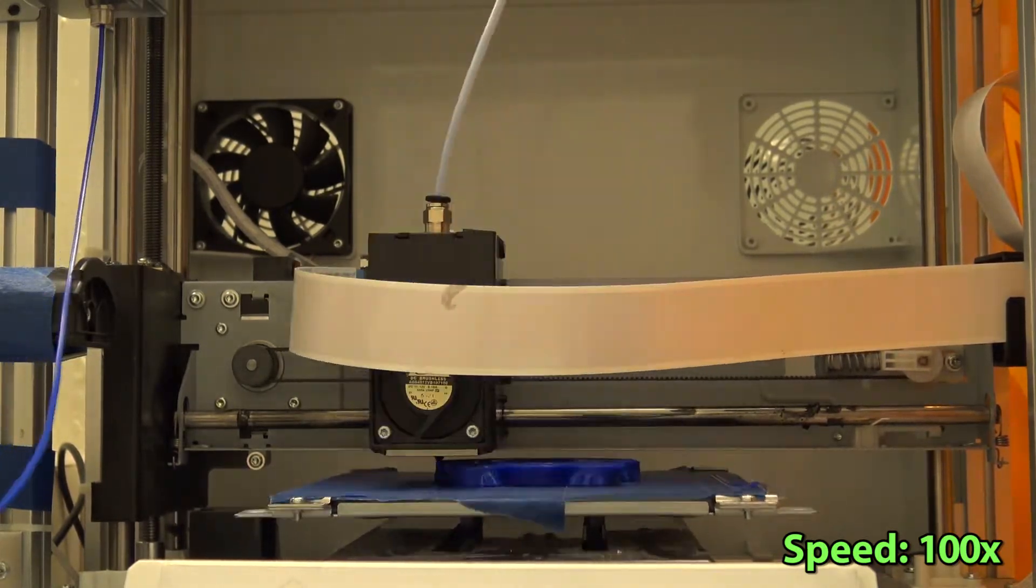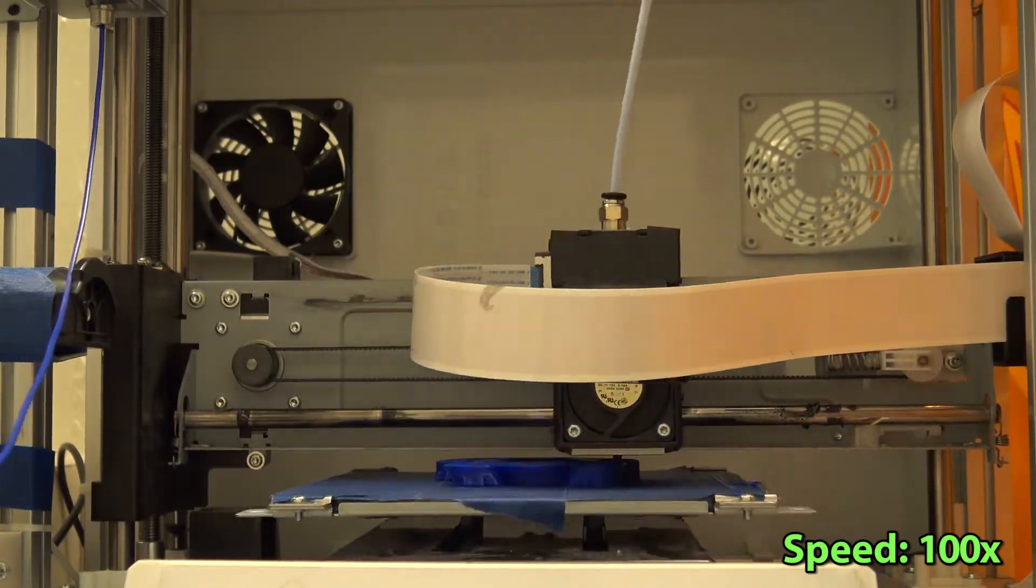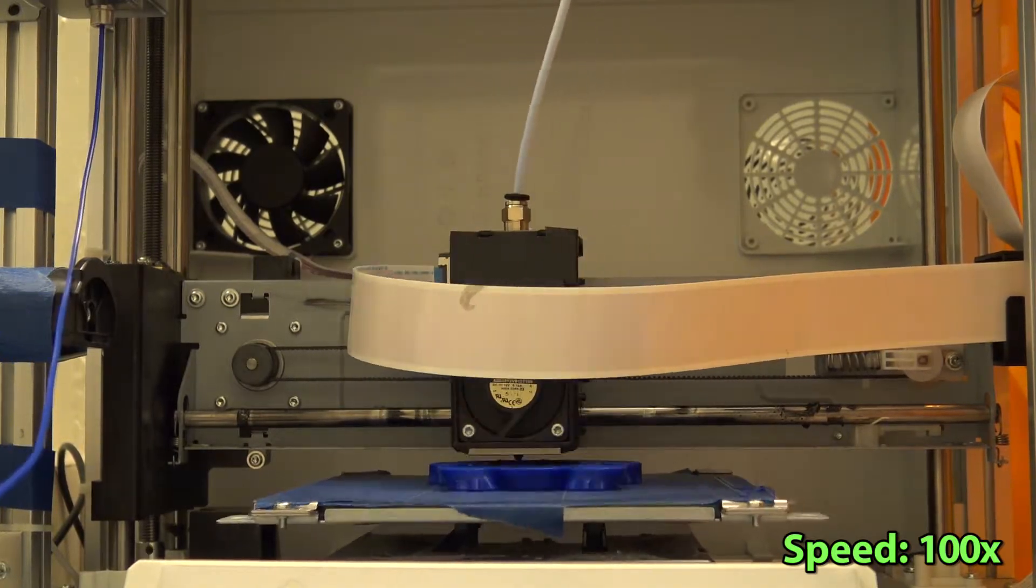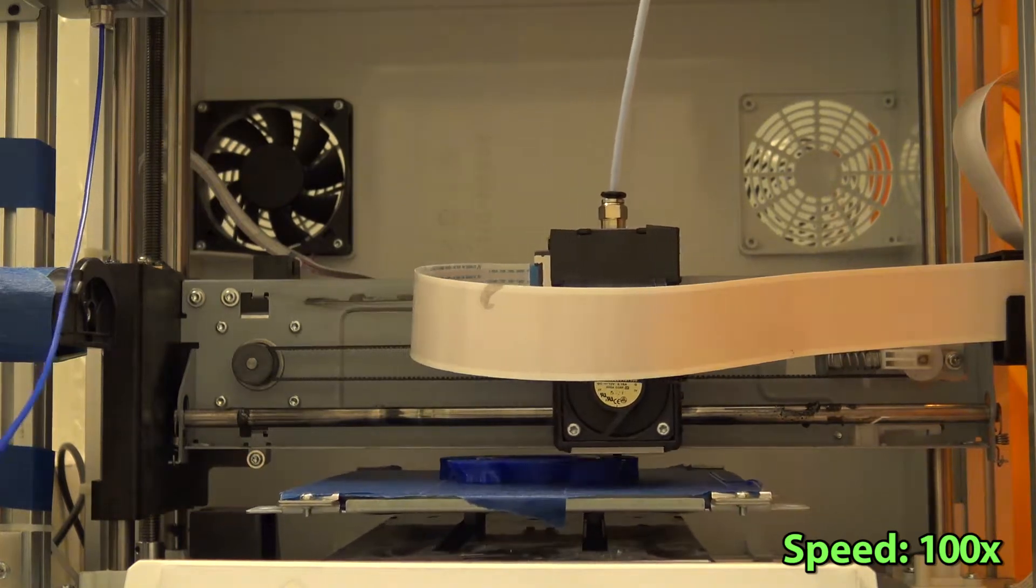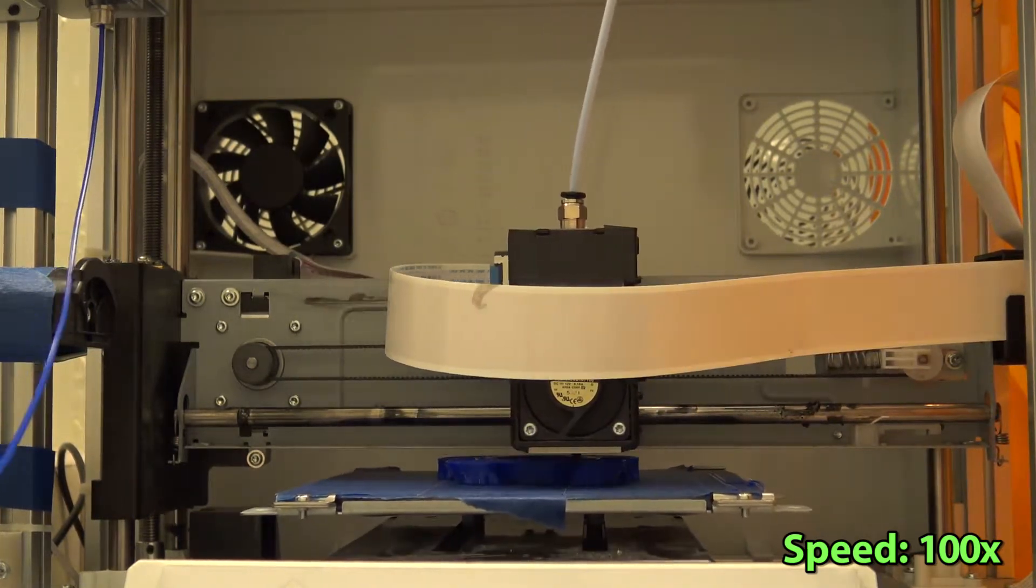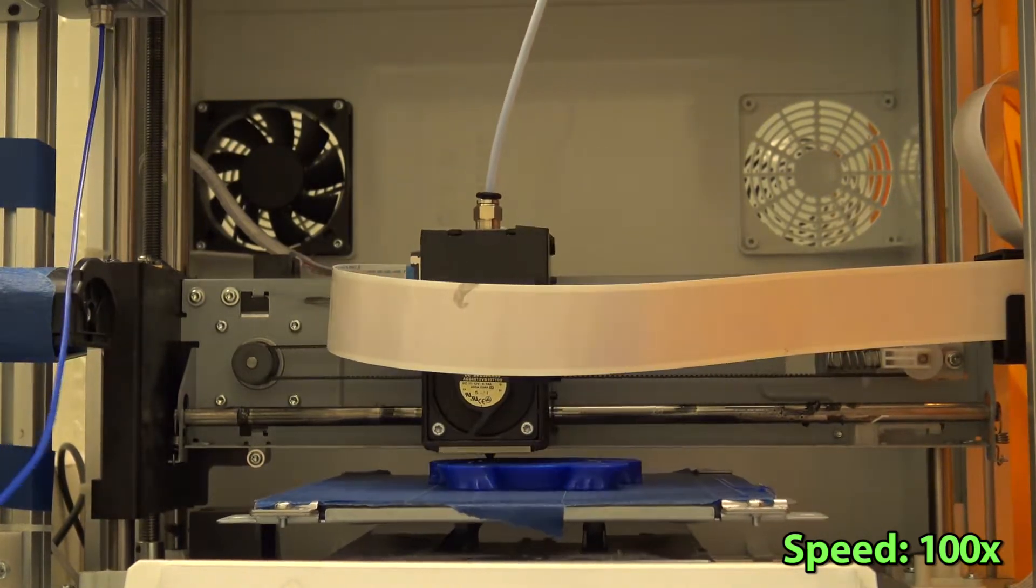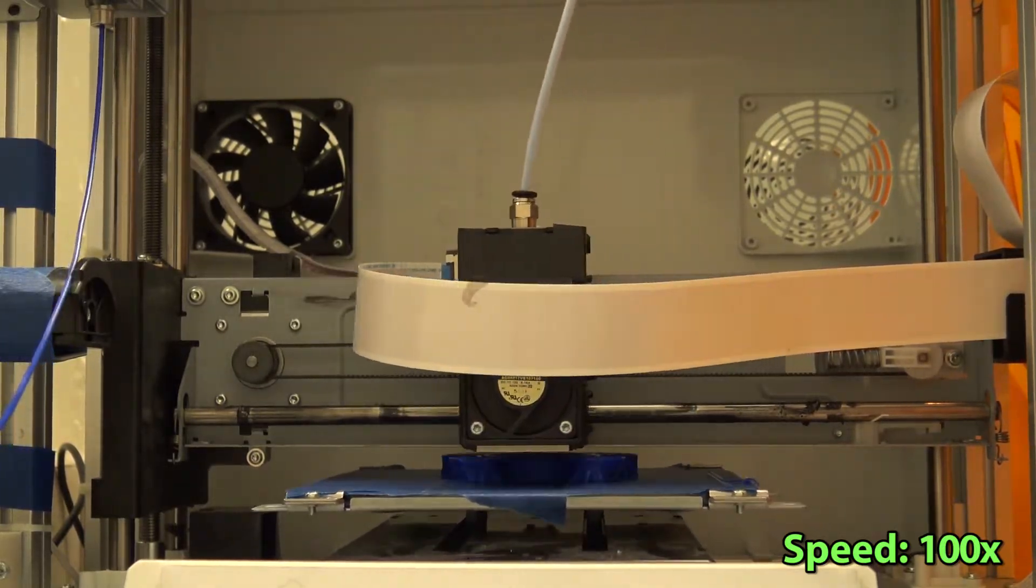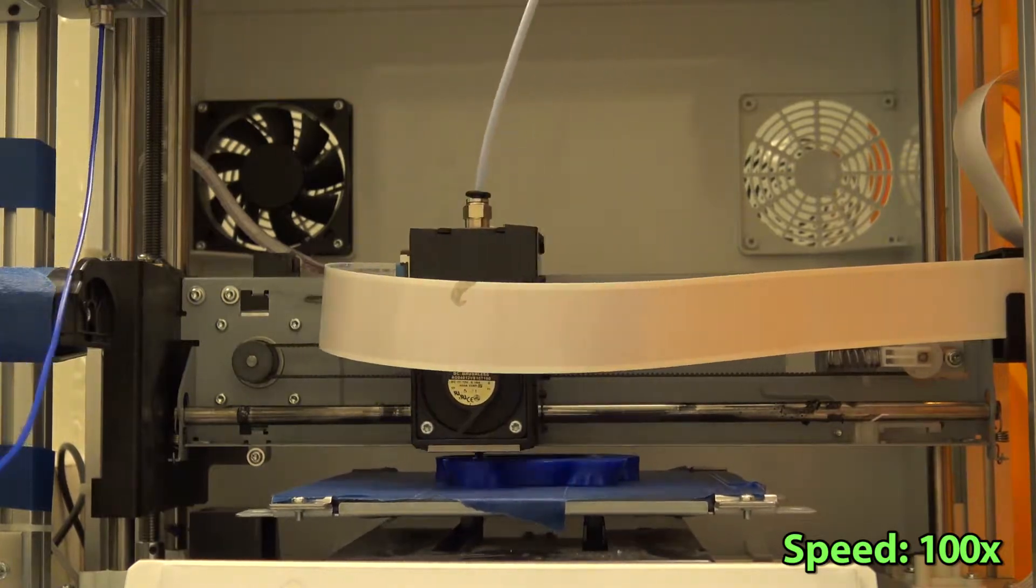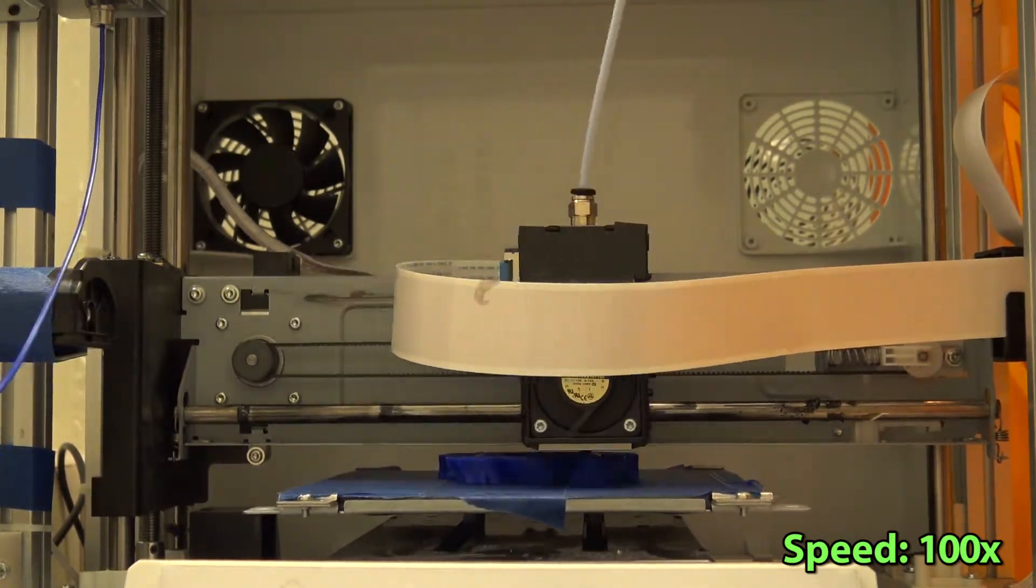Another thing I changed from the default settings was the 3D printing speed. I changed from medium speed to low 3D printing speed. I did this for allowing the previous 3D printed layer to solidify better before the next printed layer comes on top of it.